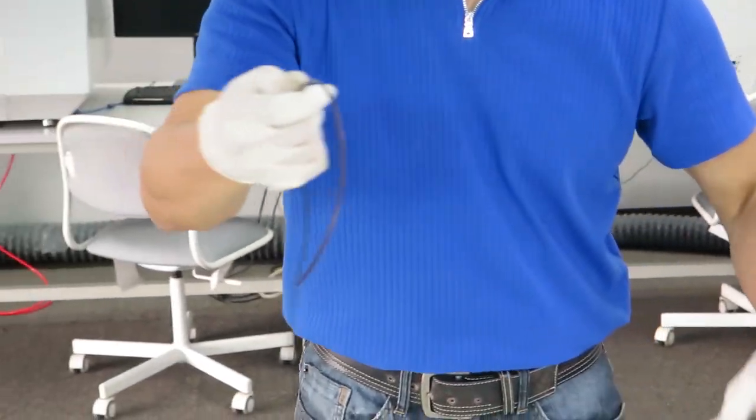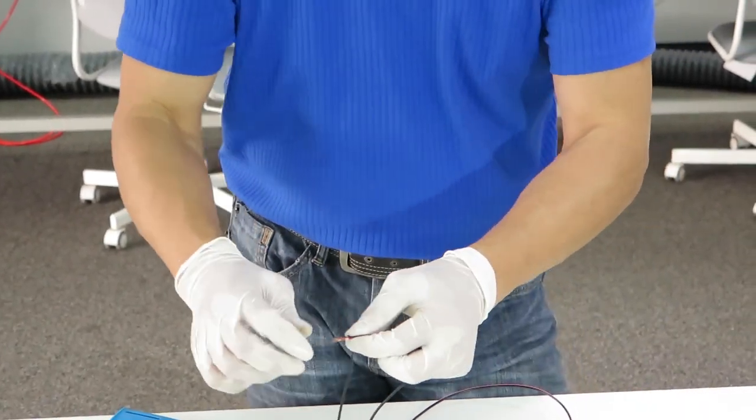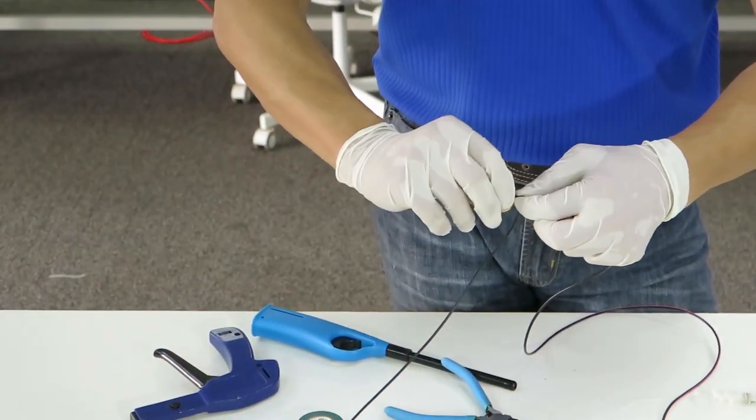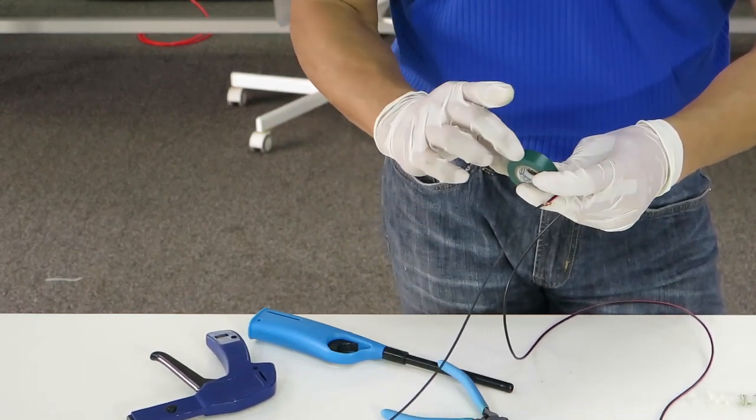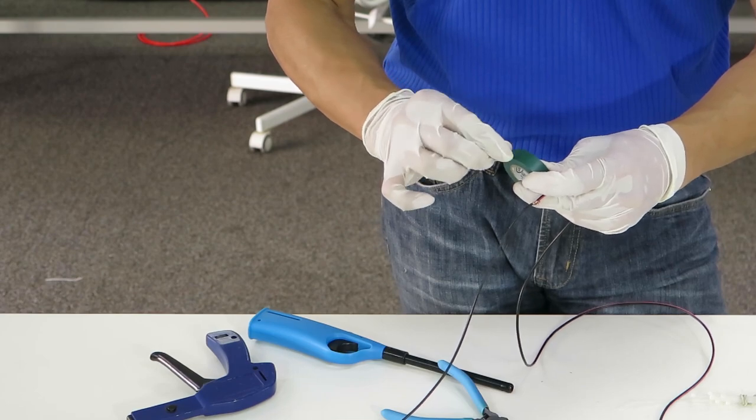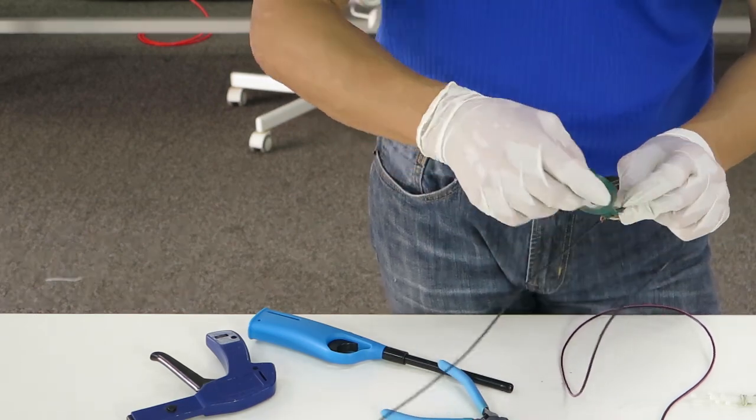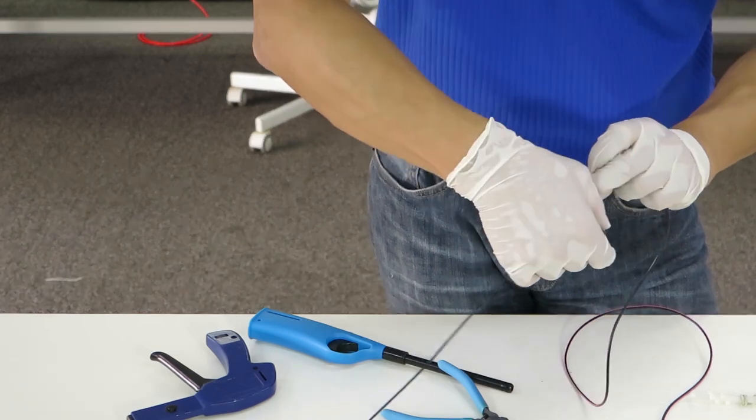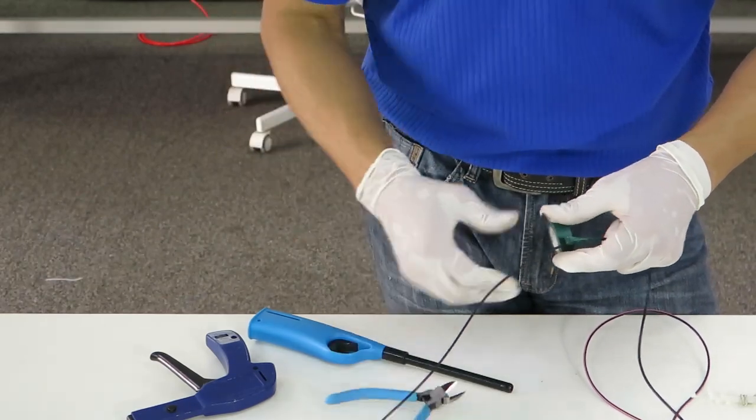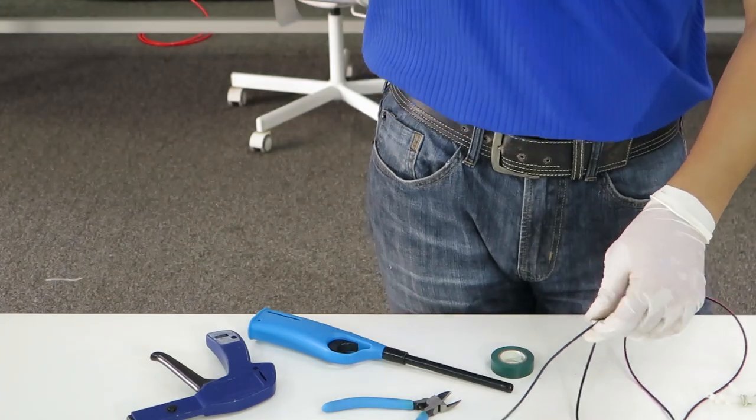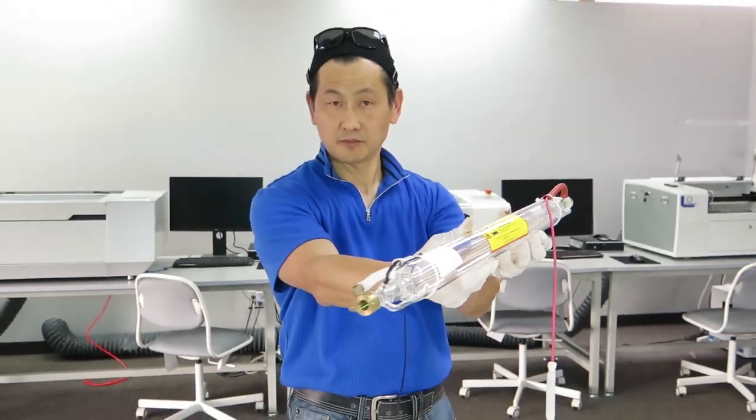Then for the negative side, this is same to the other tube. Just snap it over. And make a connection. Use an electrical tape or use the heat shrink, whatever convenient to you. All right, this is done.